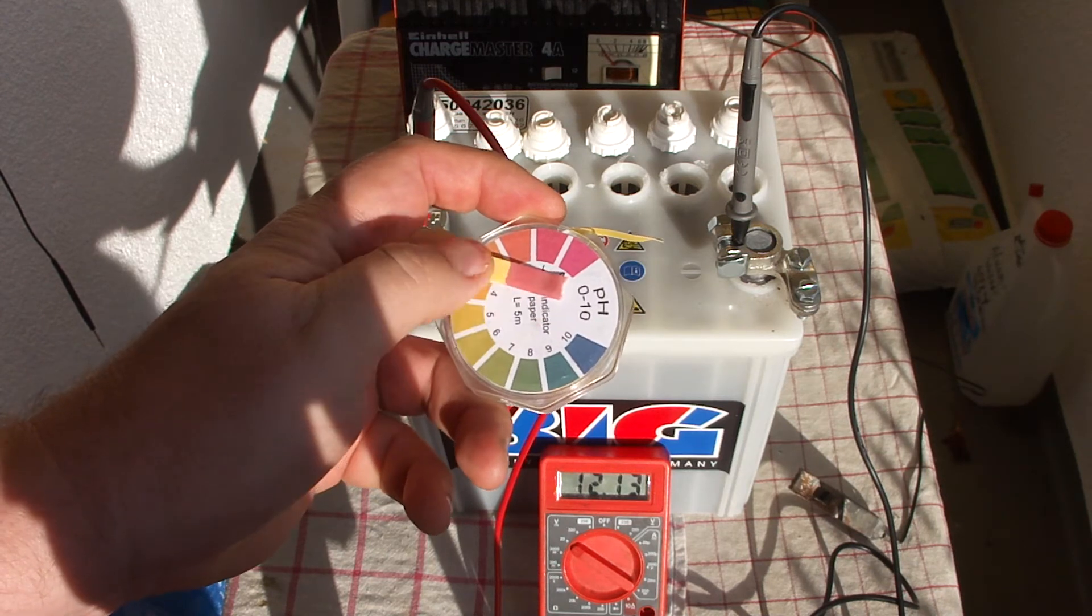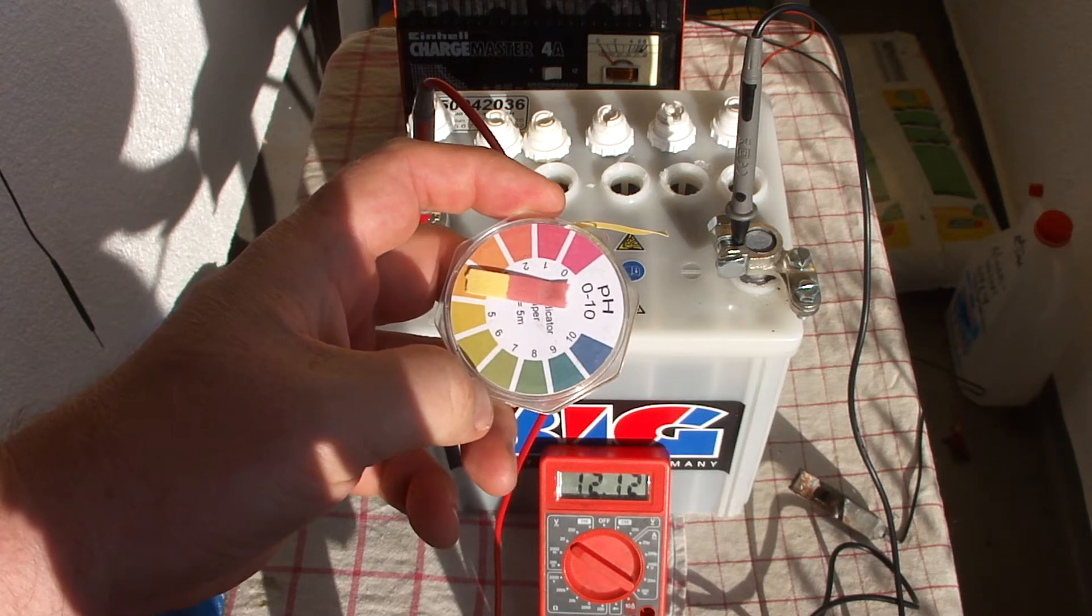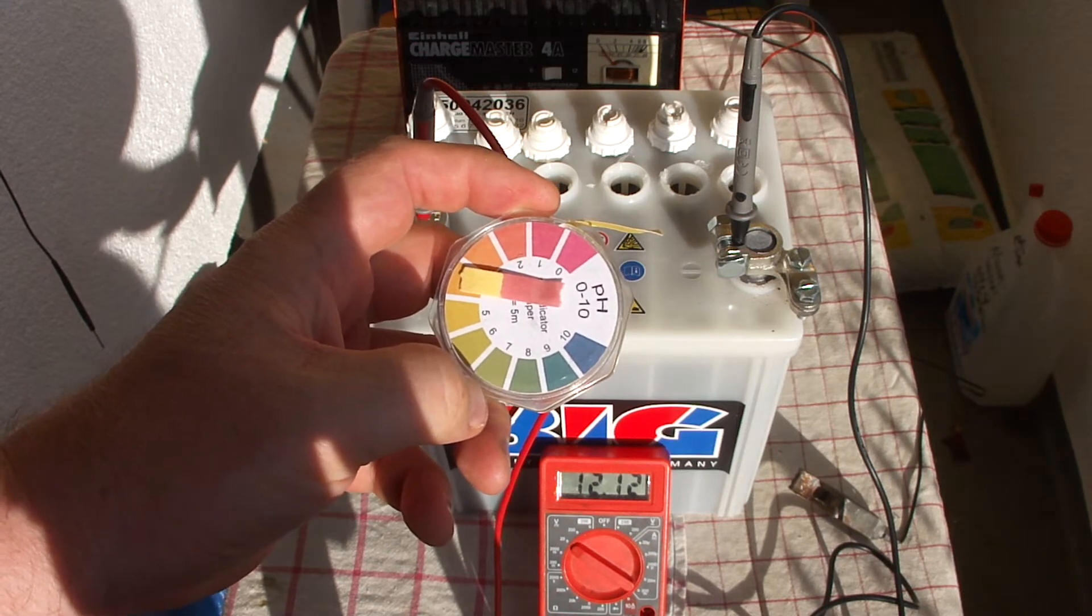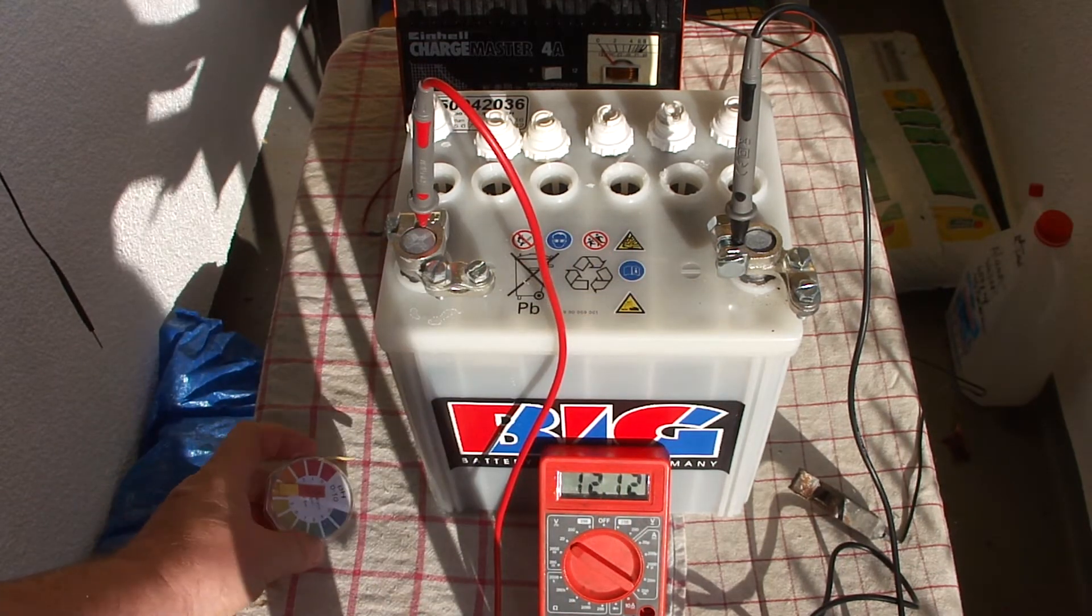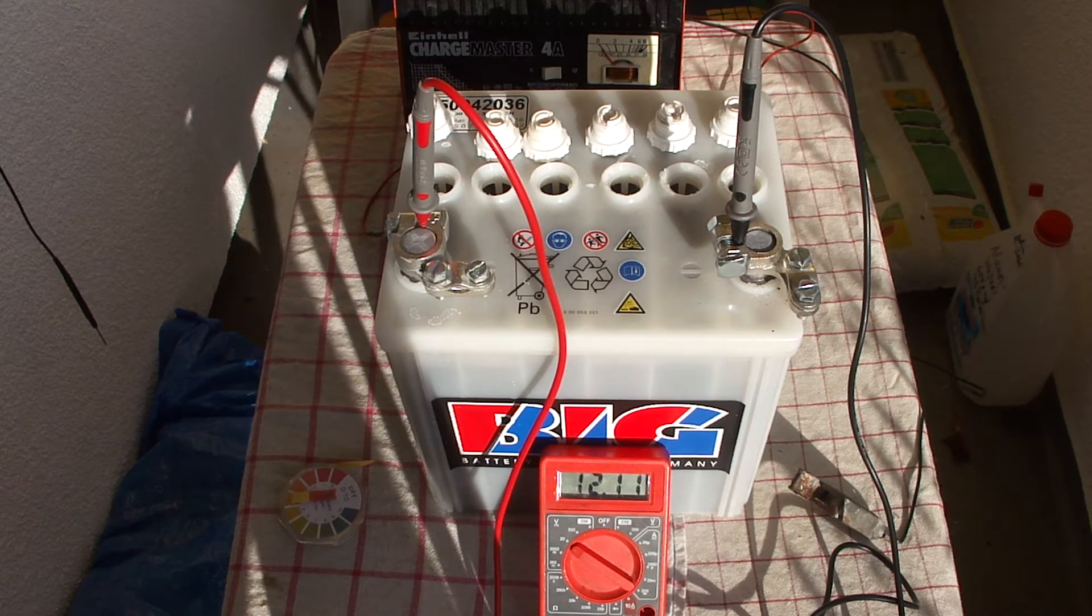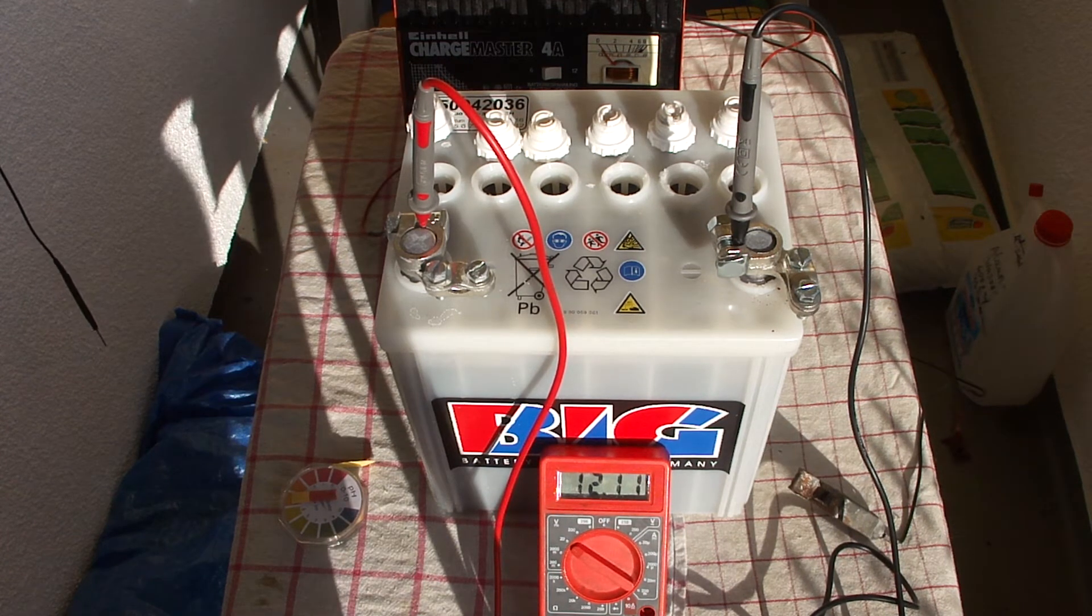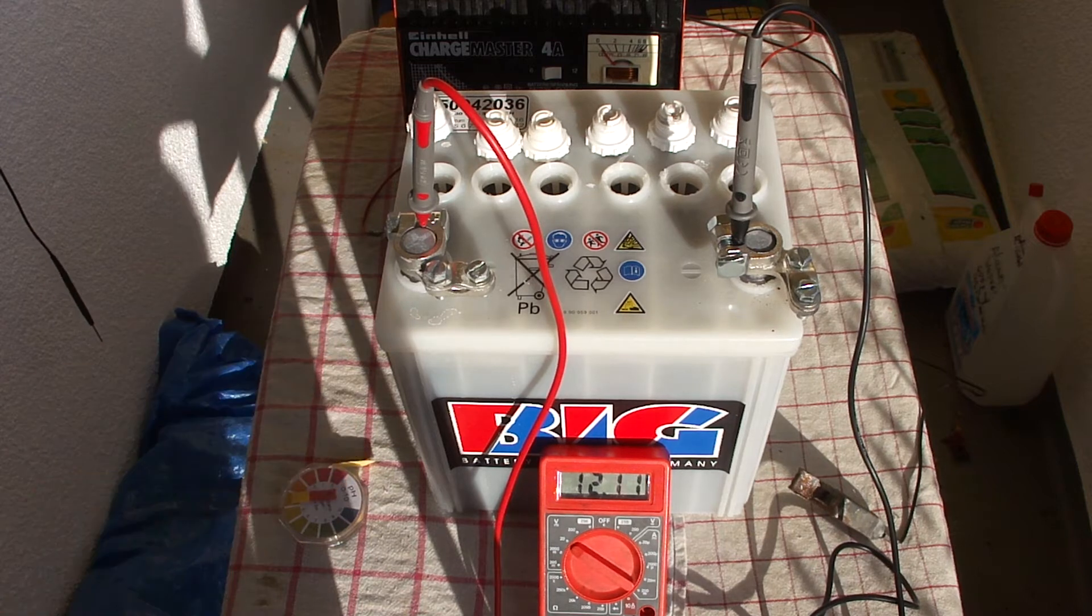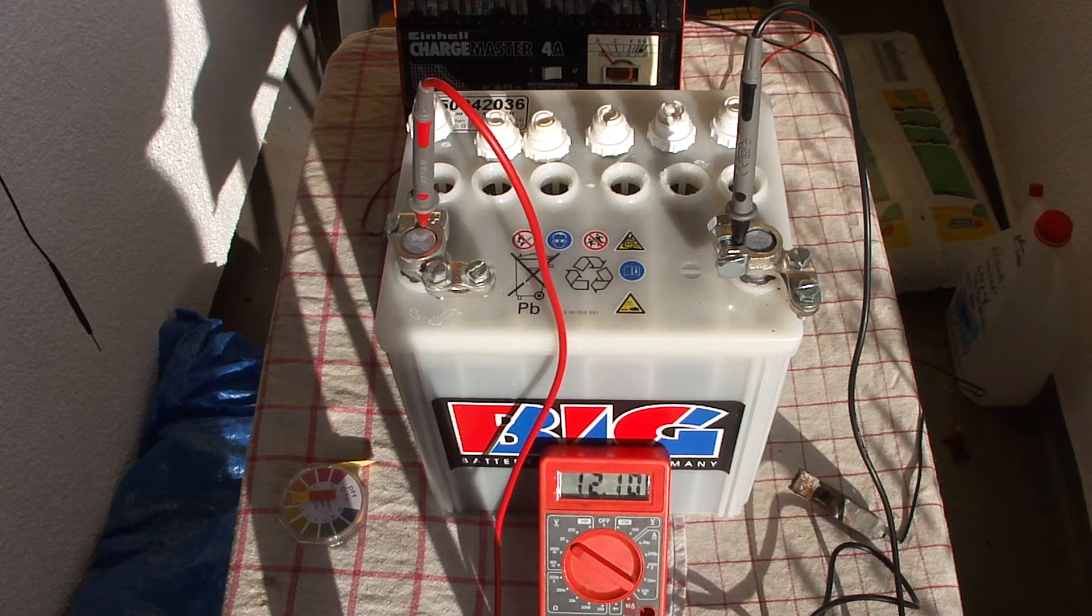It's almost 2 to 1 already, I would say. Okay, voltage is now down to 12.11 volts. So these alum batteries really have a lower standing voltage after you charge them up.